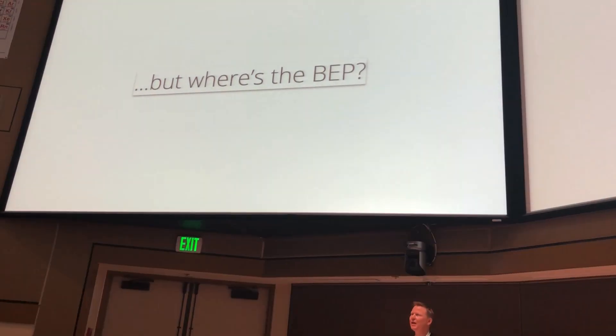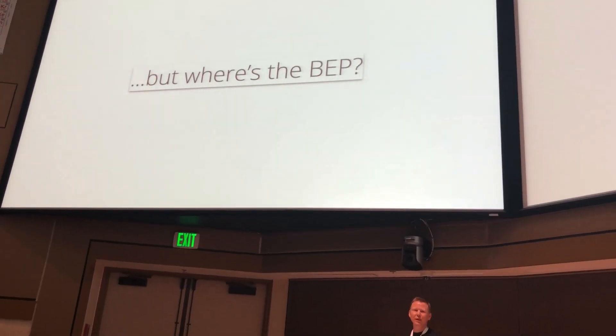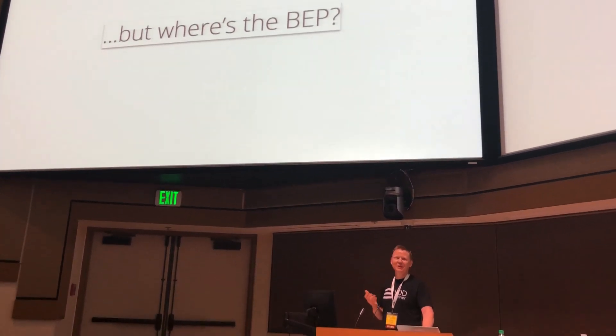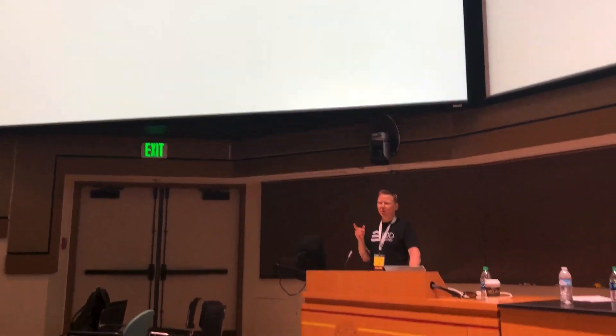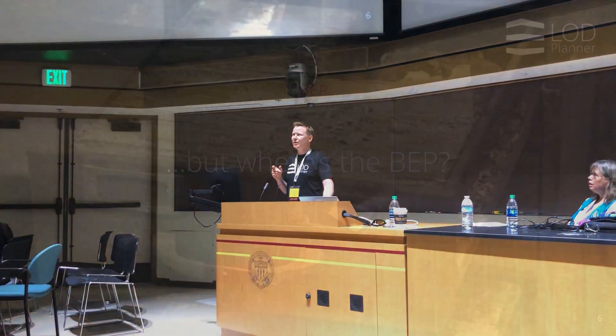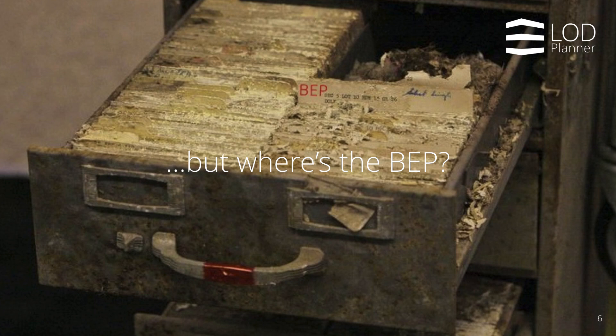But where is that BIM execution plan? Those people on projects at the moment probably know where it is. It's here — we keep it in the bottom drawer. It gathers cobwebs, and we only put it out when we are in trouble: when there's a litigation issue, a challenge, a problem.